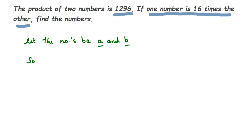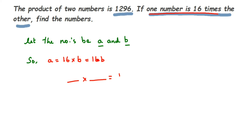We're going to write one number in terms of the other. One number is 16 times the other, so a is equal to 16 times b. You can also take b equal to 16a — it doesn't change the answer. Both a = 16b and b = 16a are correct ways.